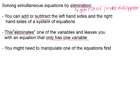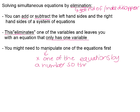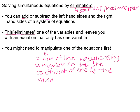So it has to be exactly the same. So you might need to multiply one of the equations by a number so that the coefficient of one of your variables is the same in both equations. Because if the coefficient is not the same, when we subtract them or add them, they're not going to eliminate each other. So the coefficient of one of the variables is the same in both equations. And I'm going to show you what I mean by that now.